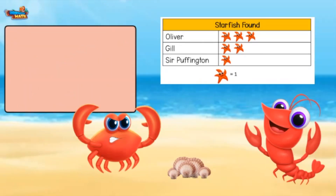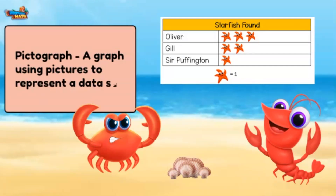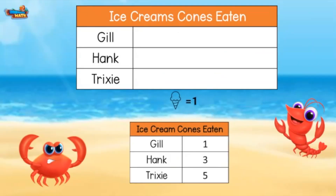Moving right along to our next type of graph, we have a pictograph. A pictograph is a graph that uses pictures to represent a data set. Here is some data about the number of ice cream cones our friends have eaten this summer. Each ice cream cone equals 1 cone. Gil ate 1 cone, so he will get 1 cone by his name.